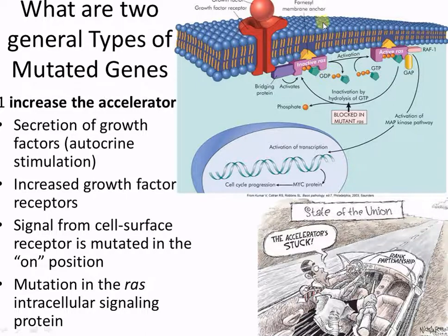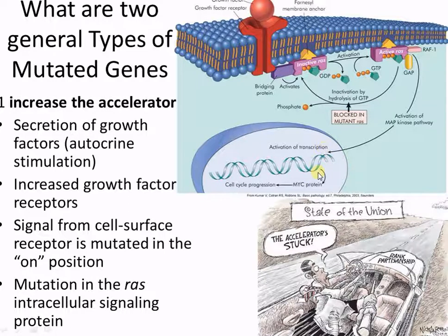Another thing that could happen is over-activity of a growth factor receptor — it just keeps growing. These enzymes could be stuck in the on position, where one enzyme in the chain reaction keeps going over and over. If any part of the machinery going down to the genes is stuck on, it keeps causing replication over and over. The key player on the inside is something called RAS. When you look at cancers and they talk about RAS, it's an accelerator. If you have an overly active RAS, it means the cell is reproducing extremely rapidly.